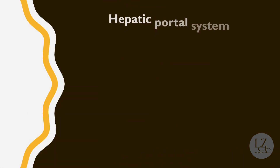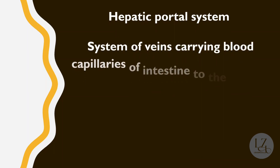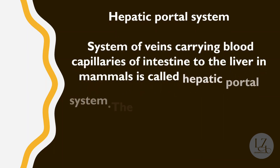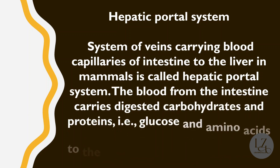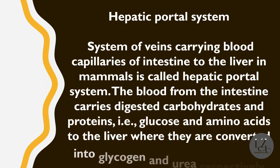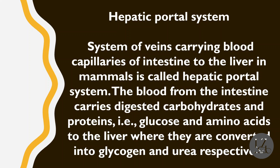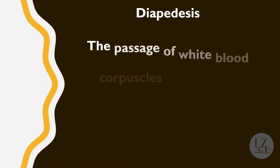Hepatic portal system is the system of veins carrying blood from the capillaries of the intestine to the liver. In mammals, blood from the intestine carries digested carbohydrates and proteins — that is, glucose and amino acids — to the liver, where they are converted into glycogen and urea respectively.